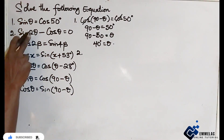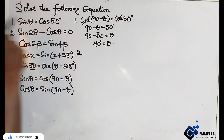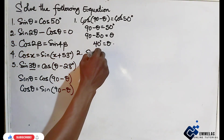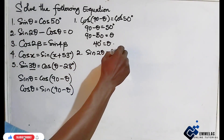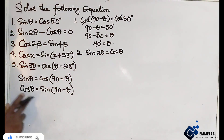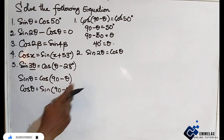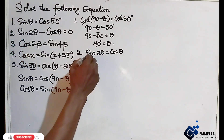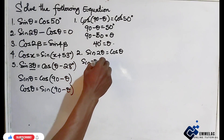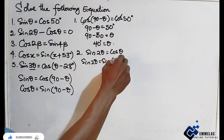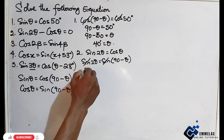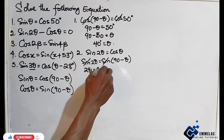Now number two. Here we make cos theta the subject of the relation. So we have sine 2 theta equals cos theta, and cos theta equals sine of 90 minus theta. We substitute for cos theta, giving us sine 2 theta equals sine of 90 minus theta. We eliminate sine and equate: 2 theta equals 90 minus theta.